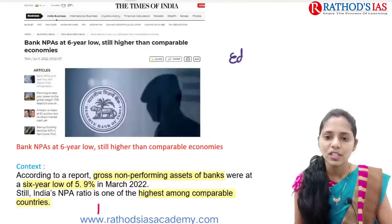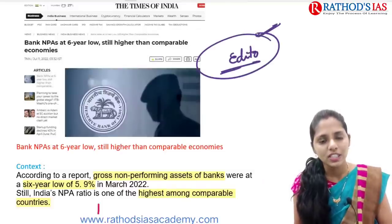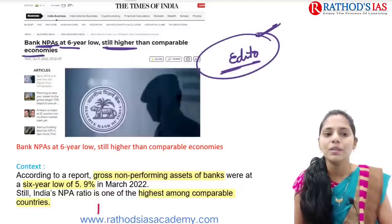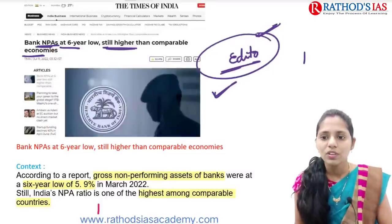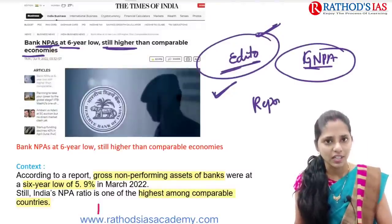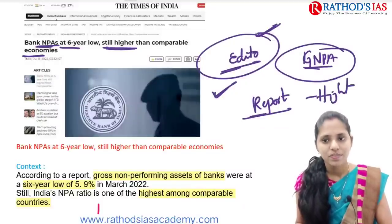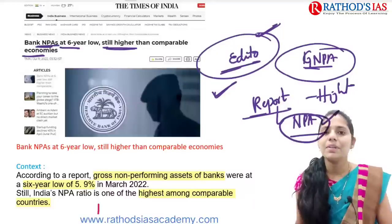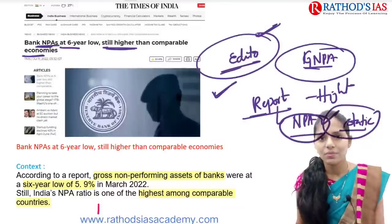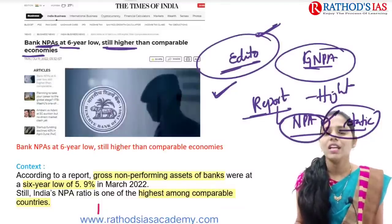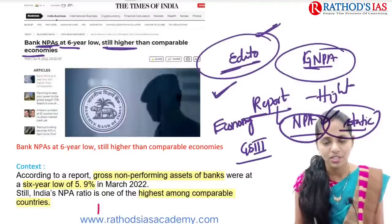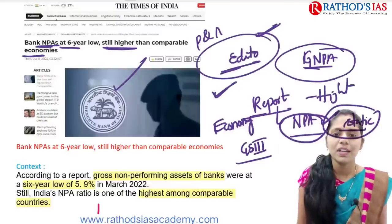Now let us see our first topic about NPAs. In today's Hindu editorial there is one article regarding NPA. The article is titled 'Bank NPAs at six-year low, still higher than comparable economies.' This topic is important from your economy syllabus which comes under GS Paper 3, and it is important for both prelims and mains.